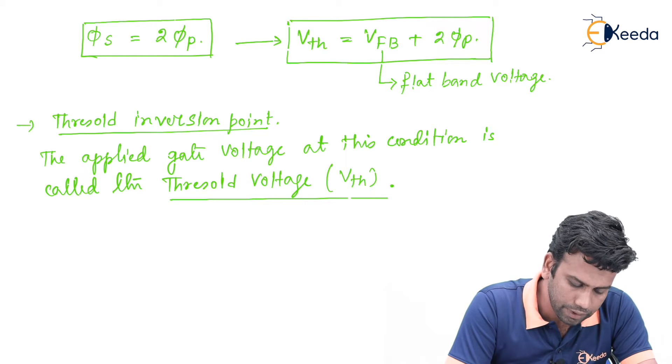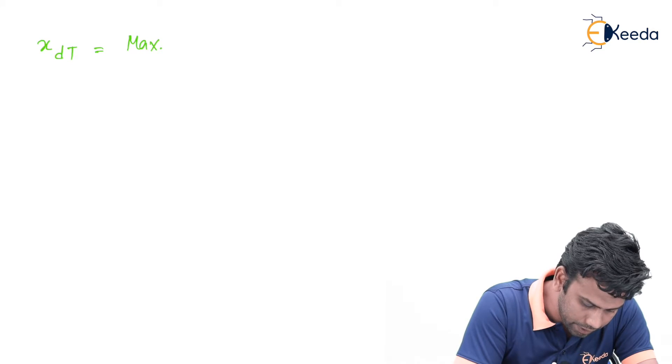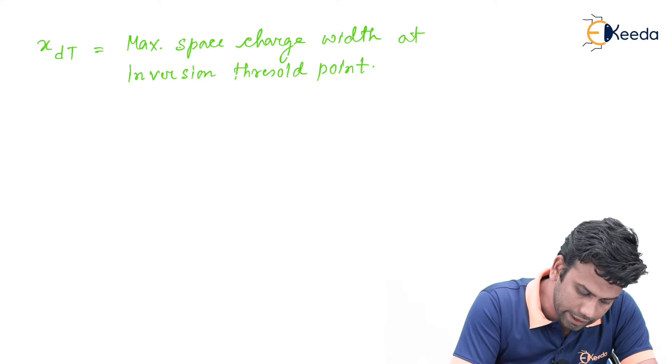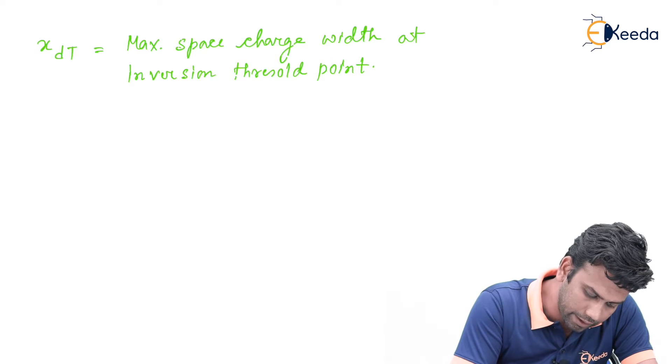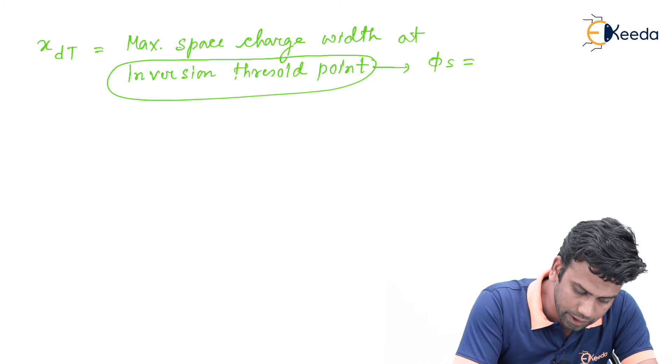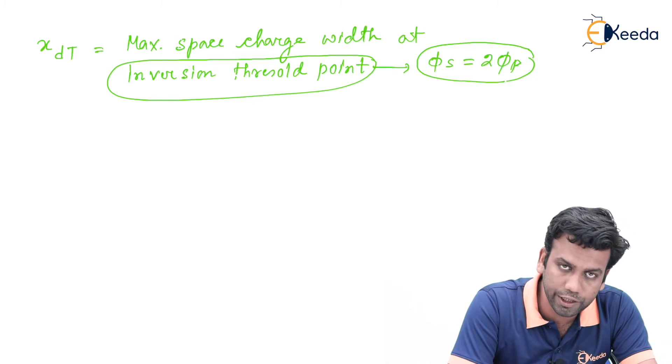From this we can define that the maximum space charge width xdt is the maximum space charge width that occurs at the inversion threshold point, and it can be calculated. The inversion threshold point is when phi s equals 2 of phi p.